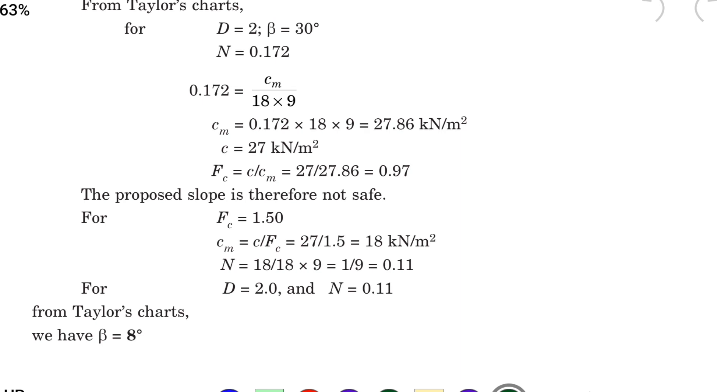So further FC value is 1.50. So CM equal to C divided by FC. So that is 27 divided by 1.5 that is 18 kN per meter square.